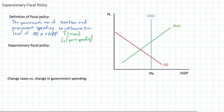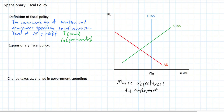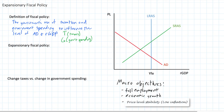By changing the levels of taxation and government spending, the government can influence the level of aggregate demand, either stimulating it during recessions or contracting it during periods of inflation, in order to promote the macroeconomic objectives of full employment — meaning nearly everyone who wants a job has one — economic growth, meaning output is increasing over time, and price level stability, meaning inflation is low and stable. Changing aggregate demand through fiscal policies can help raise or lower the inflation rate.